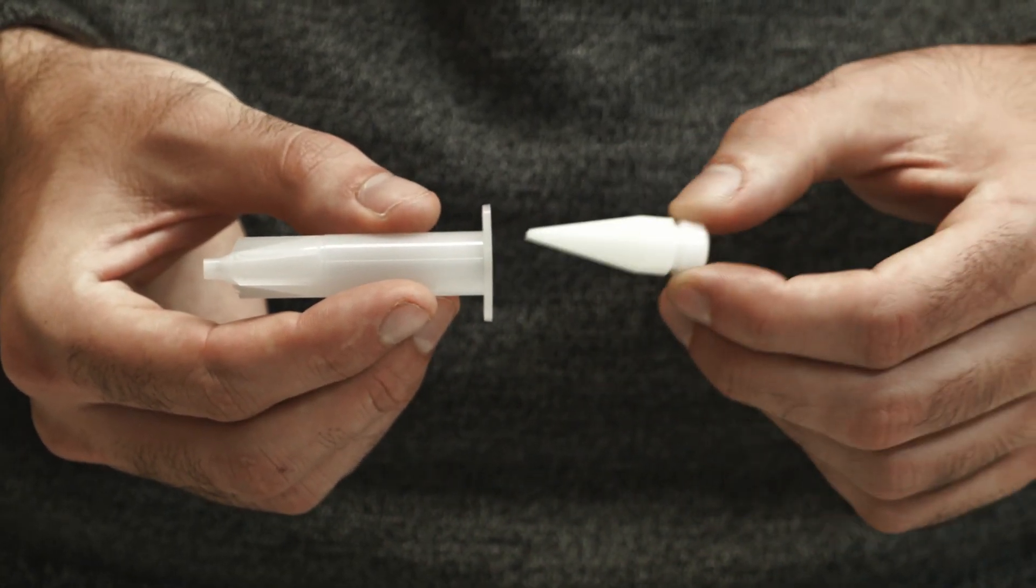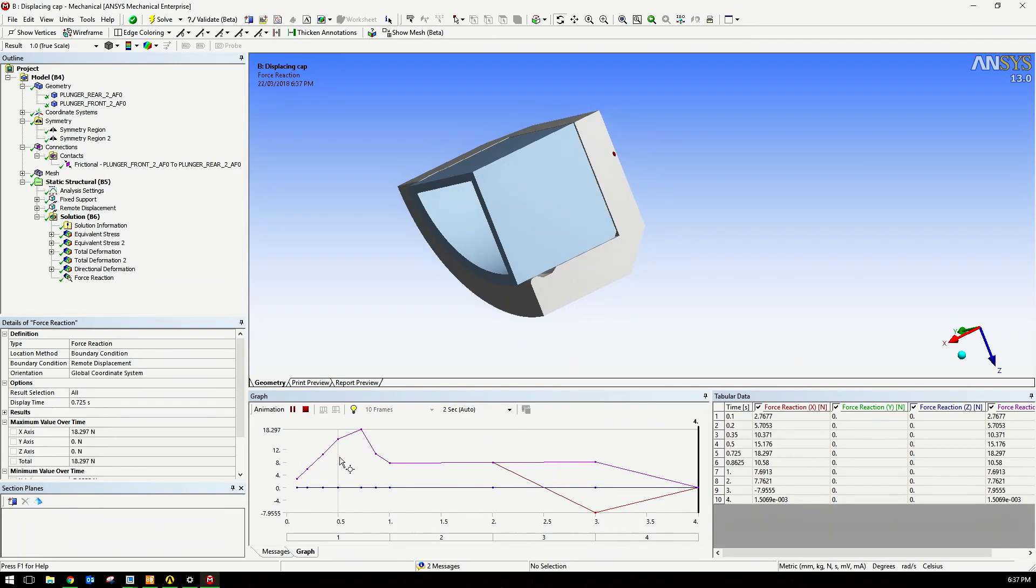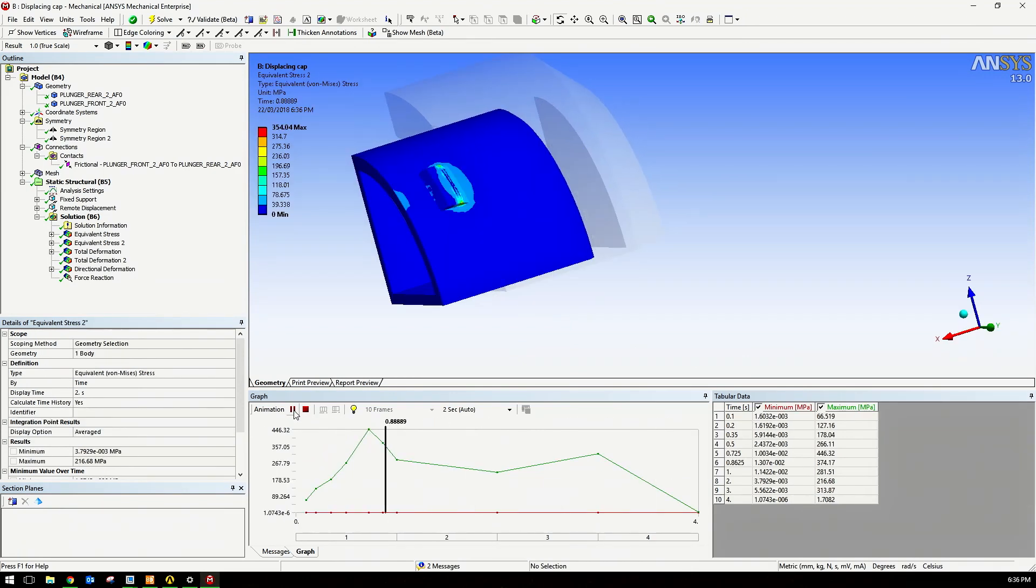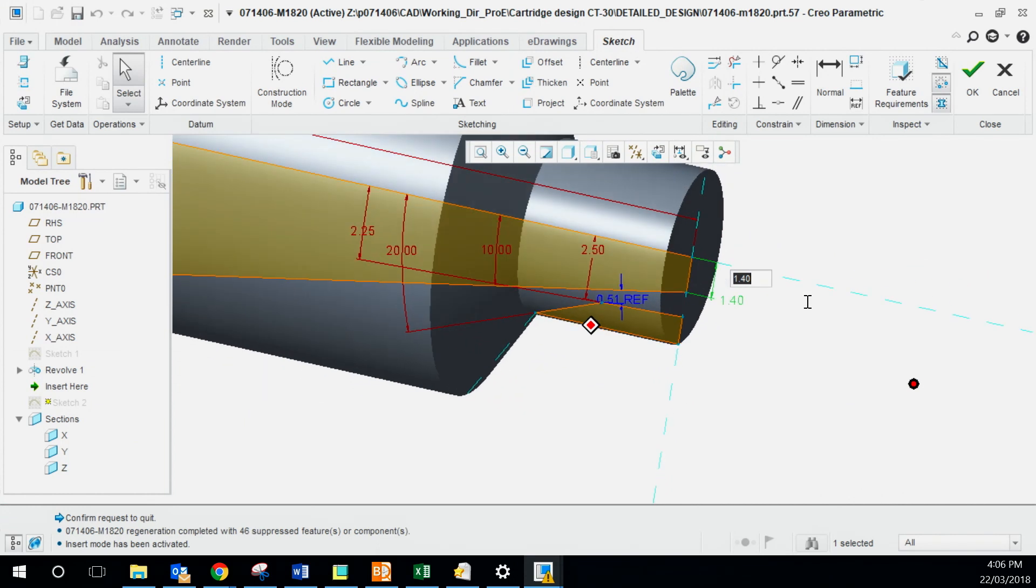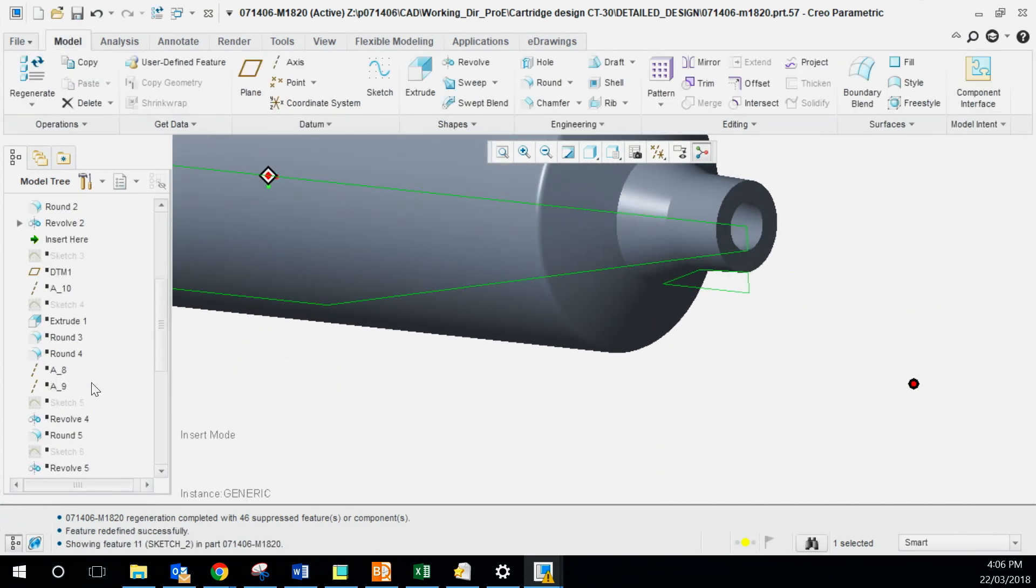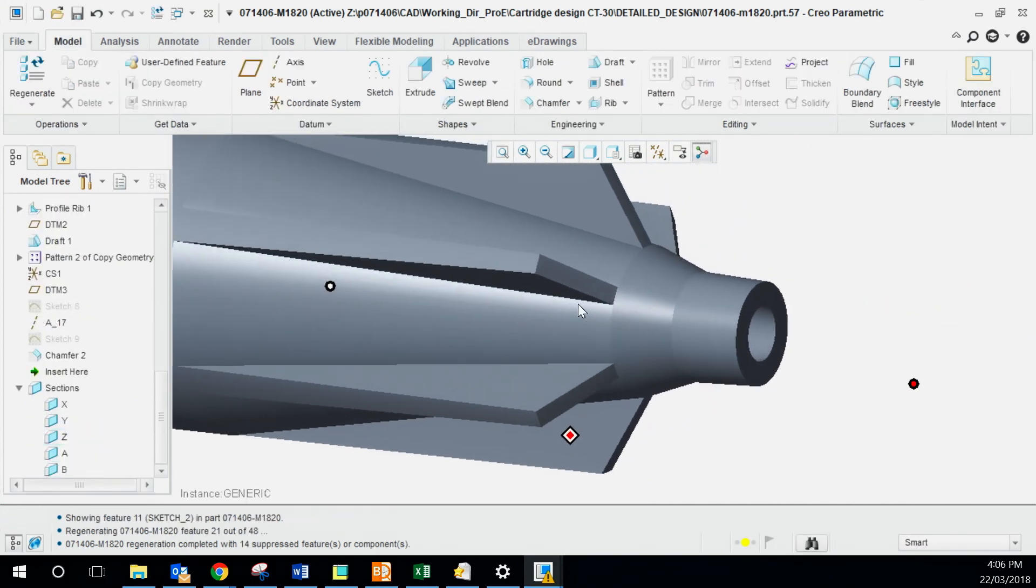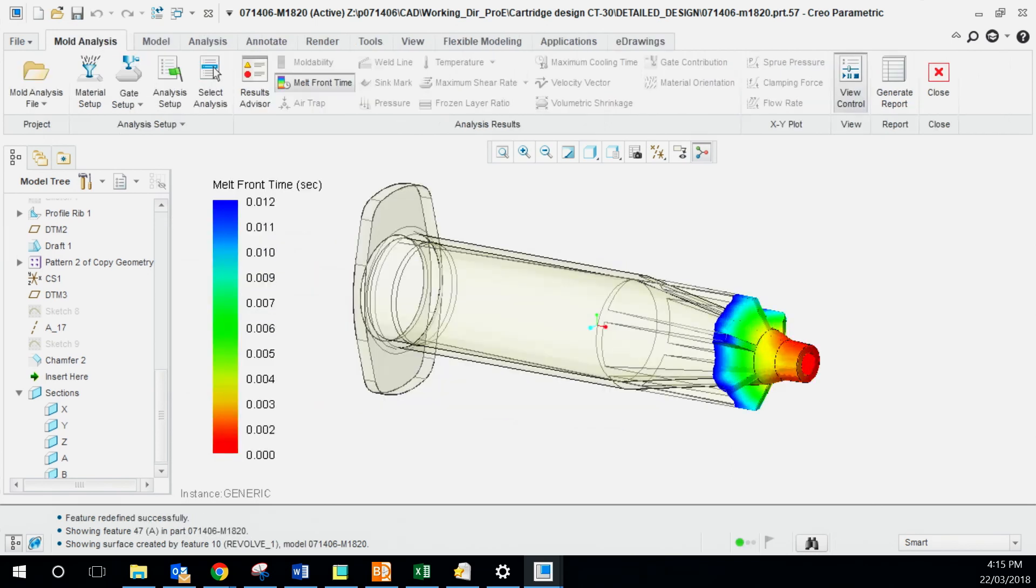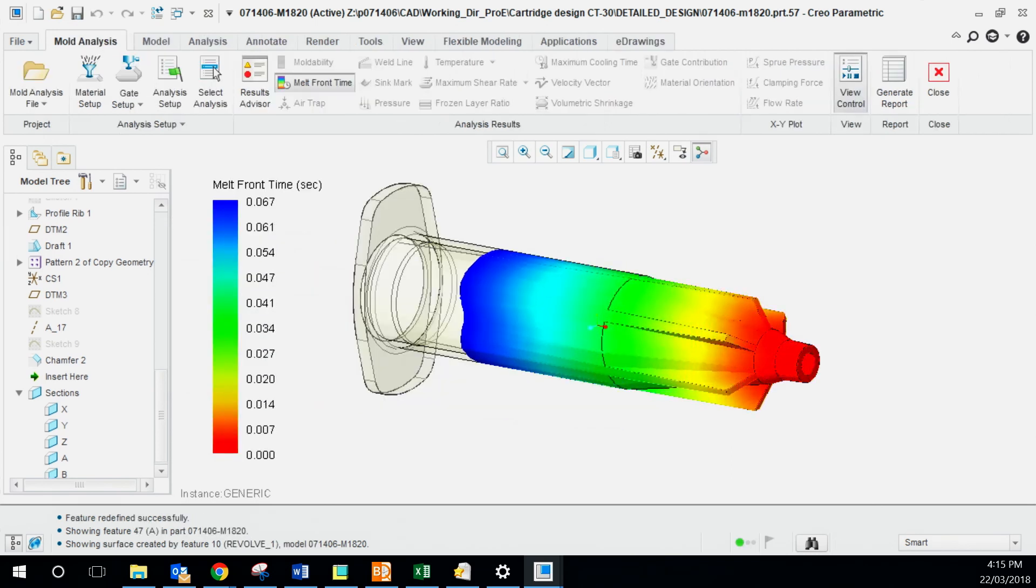The 3D printed prototype confirmed the outside geometry, and then we could move to the formal design process. This part included CADing up the various parts of the cartridge, which included the main body, the two parts of the plunger and the cap. From there we could do some moldflow analysis before moving to our tool design.